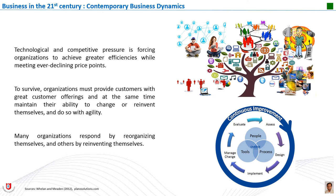3M, a company that started out as a niche mining concern, evolved into a multi-billion dollar solution provider with customers in over 200 countries and over 55,000 product solutions. Nokia started as a manufacturer of paper, then moved into rubber and electricity generation, then telecommunications. The most successful companies adapt to embrace and exploit change. Change has always been present and it has always been a necessity for organizations to master change if they want to excel. Many organizations respond by reorganizing themselves; others reinvent themselves entirely.